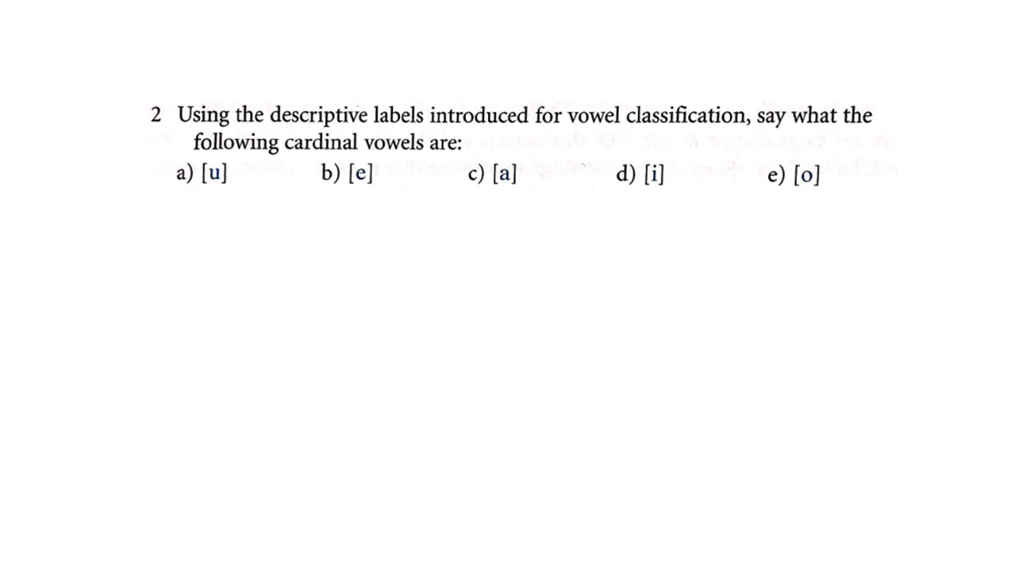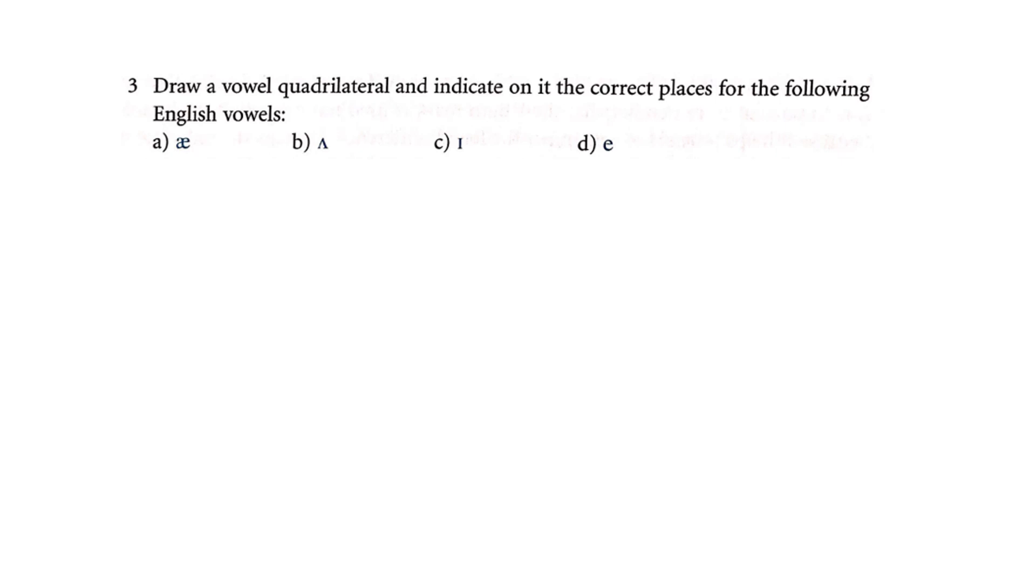Using the descriptive labels introduced for vowel classification, say what the following cardinal vowels are. Draw a vowel quadrilateral and indicate on it the correct places for the following English vowels. Stop the video for two minutes to do the exercise, then check your answer.